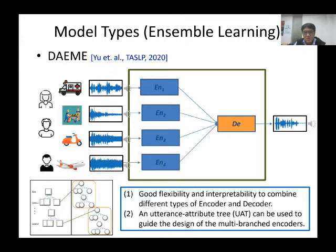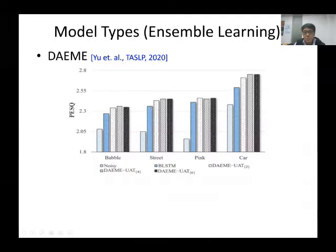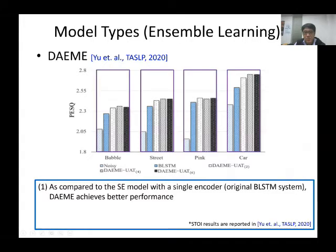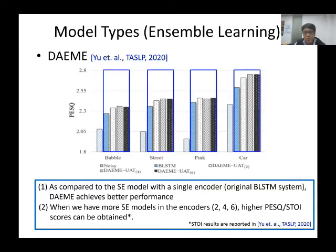The UAT is built based on acoustic knowledge. We first divide training data into two groups — male and female — giving two nodes in the first layer. Each node is further divided into high SNR and low SNR, giving four nodes in the second layer. Based on this UAT, we build the DAEME system. Experimental results show that the ensemble learning approach DAEME outperforms the original BLSTM, and with more speech enhancement models, we can obtain better performance.